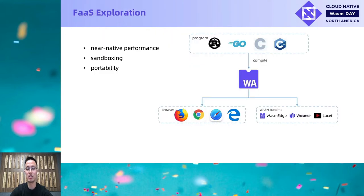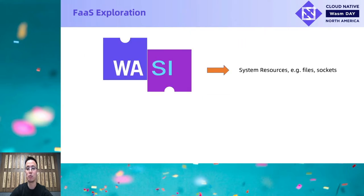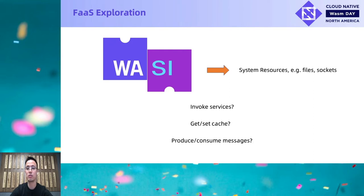In addition to normal applications, we are also exploring the FaaS area. WebAssembly, aka Wasm, was introduced to web browsers to address performance issues with JavaScript. However, its near-native performance, sandboxing, and portability features also make it attractive for FaaS scenarios. With WASI, Wasm provides a high-level model for accessing system resources. However, in real cases, there are many other resources required to make a normal application work — for example, invoking services, get/set cache, produce or consume messages, etc. Lack of these features makes it hard to host serverless applications in Wasm.